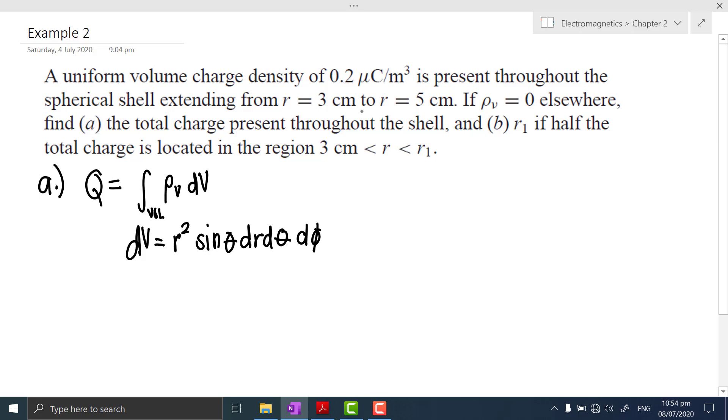Therefore, our total charge would be the integral with the limits for φ, the limits for θ, and the limits for r converted into meters times the integral of the volume charge density, which is a constant. Because the volume charge density is a constant, property of integration, we can factor this out.